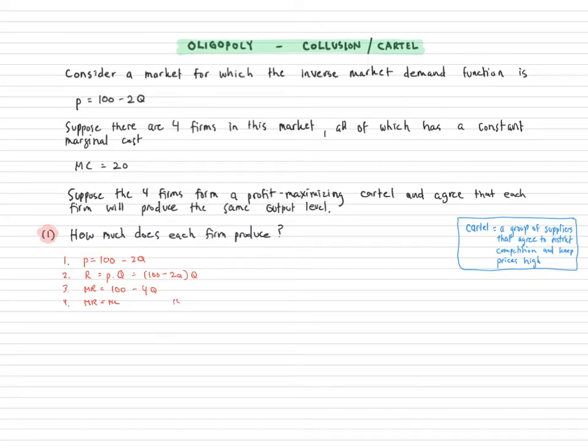So I take the marginal revenue, I set it equal to marginal cost. I have that 4q equals 100 minus 20, 80, q equals 20. All right, so that's good. Now we know how much the monopoly should be producing in order to maximize profit.